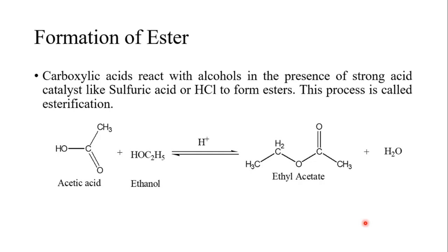The sixth reaction is the formation of ester, which is called esterification. Carboxylic acid reacts with alcohol in the presence of a strong acid catalyst such as HCl or H2SO4 to form the ester. Here we take one acetic acid plus ethanol, and one acid is used as a catalytic agent. So the hydrogen ion is added, one water molecule is removed, and we get ethyl ester as the product of this reaction.